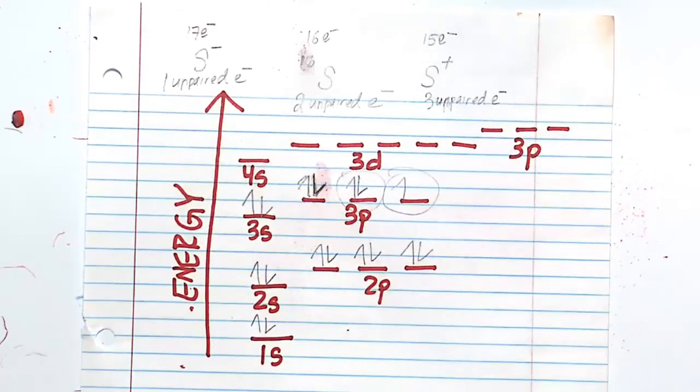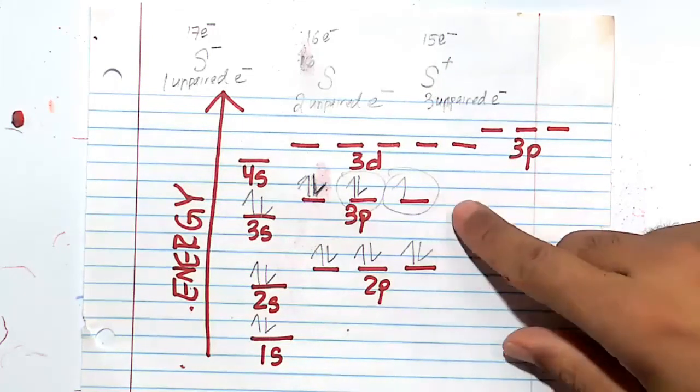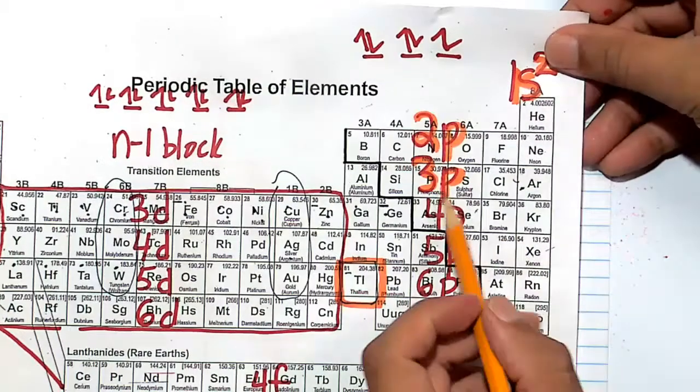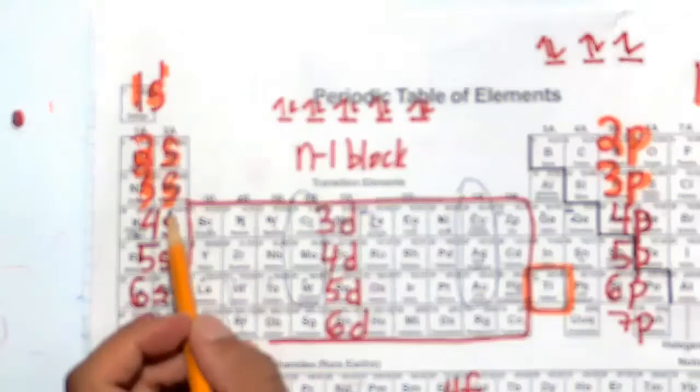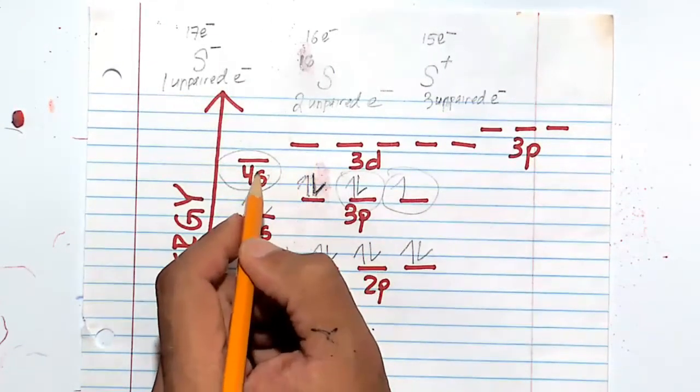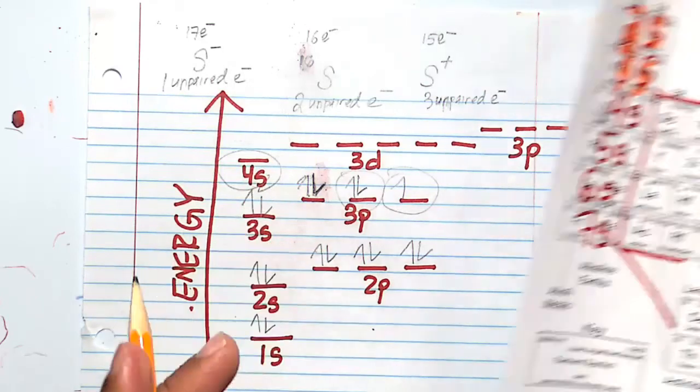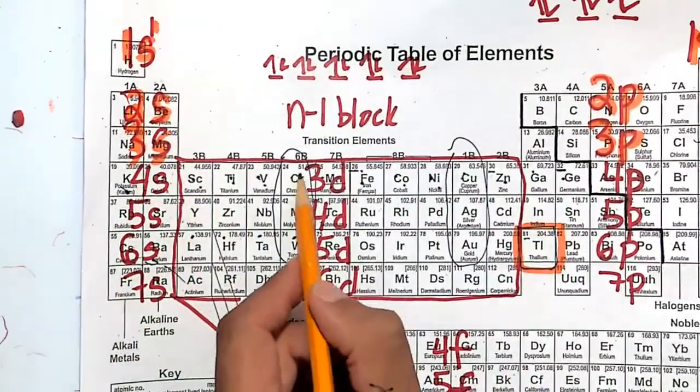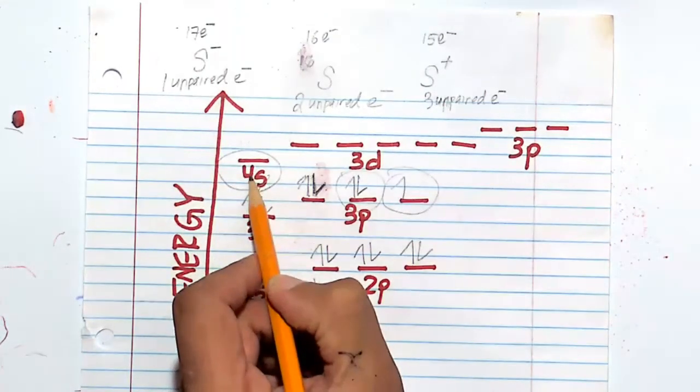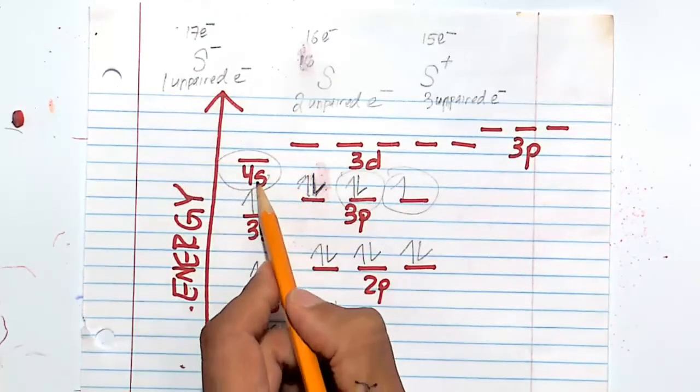By the way, don't forget the order. After you fill 3P, what will happen? You fill 3P, and then you go to 4S. What happens as the electrons march? Where will they go after they go to 4S? After 4S, they will go to 3D, and then 4P.